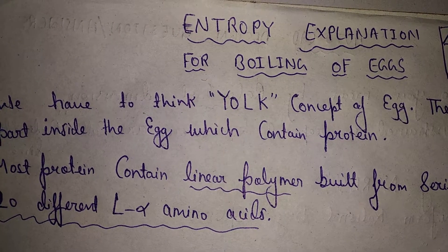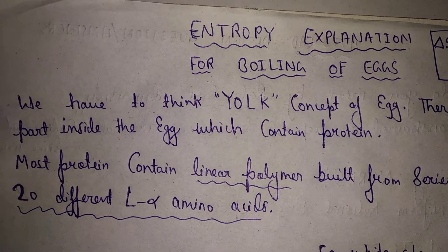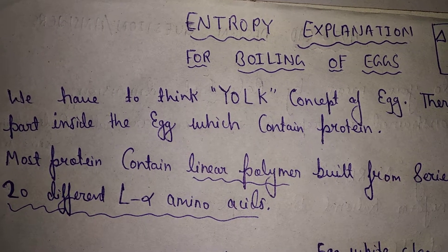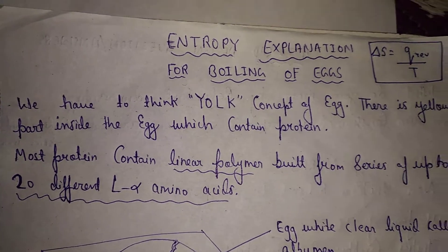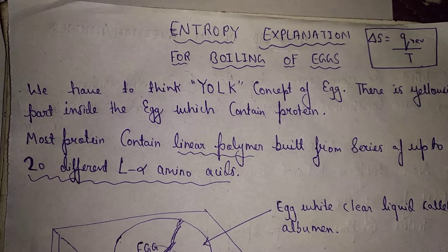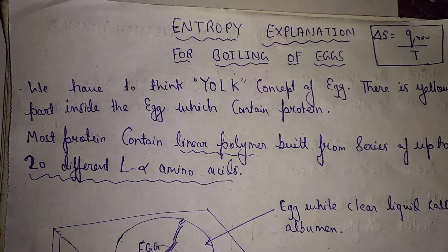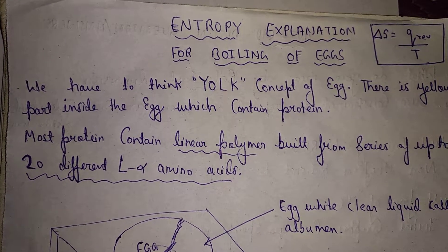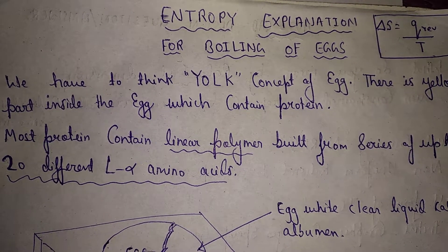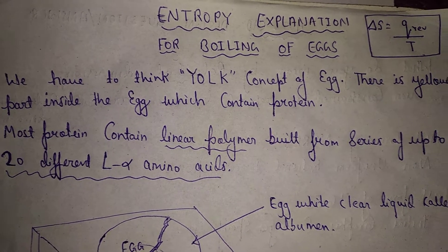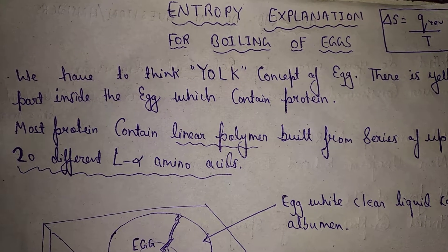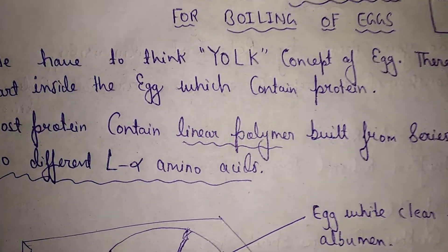We have to think about the yolk concept of the egg. The yolk is the yellowish part inside the egg. This yellowish part contains protein. Most protein contains a linear polymer built from a series of up to 20 different L-alpha amino acids.